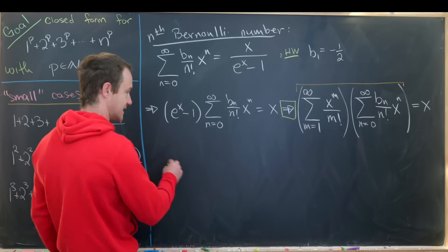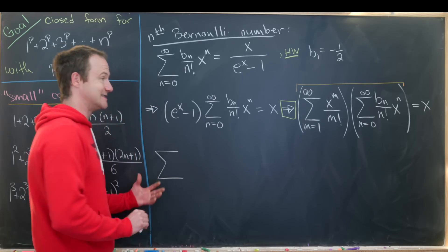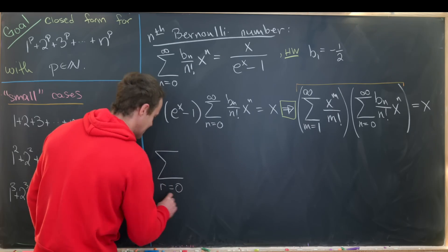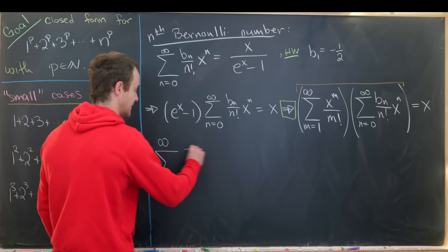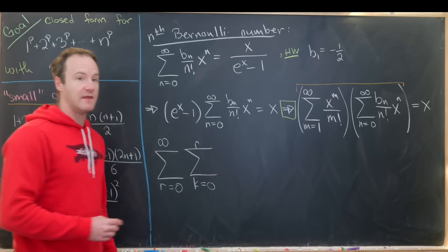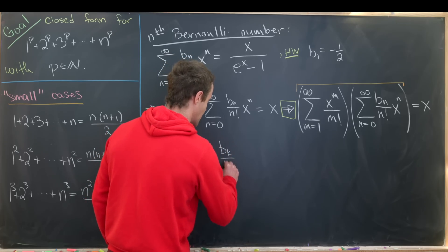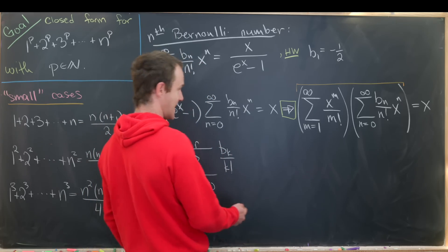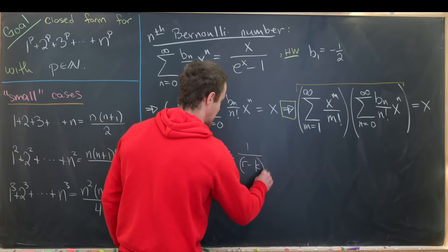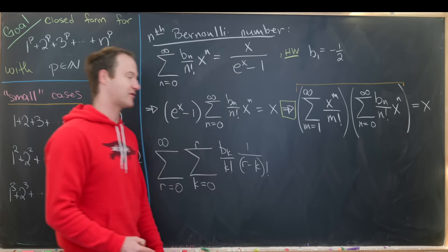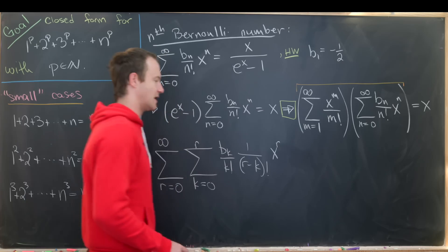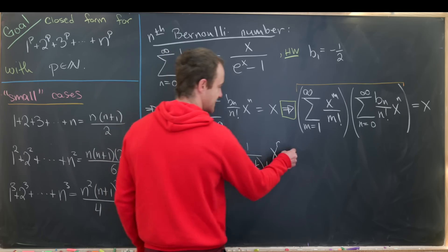We use the Cauchy product formula to take the product of these two infinite series. That gives us a double sum: the outer sum as r goes from 0 to infinity, and the inner finite sum as k goes from 0 to r of b_k over k factorial times 1 over (r-k) factorial, times x to the r — all equal to x.